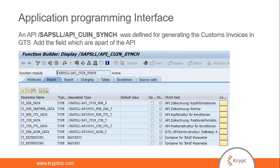This API is not only important for interfaces — sometimes organizations have specific important fields they want to update in the GTS customs invoice. Those fields can also be modified, and we can push that field data from ERP to GTS using this API.